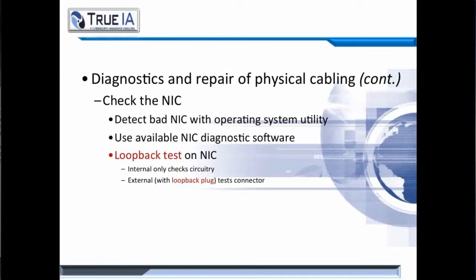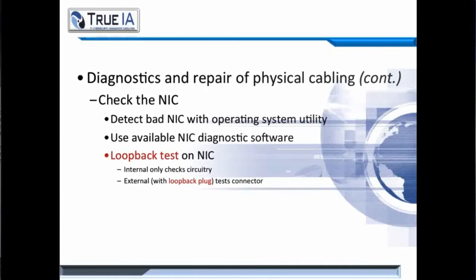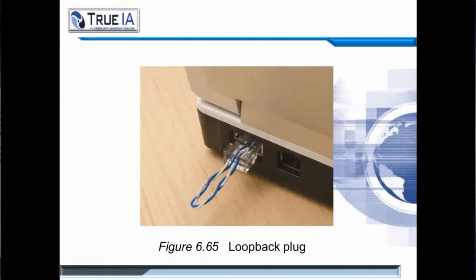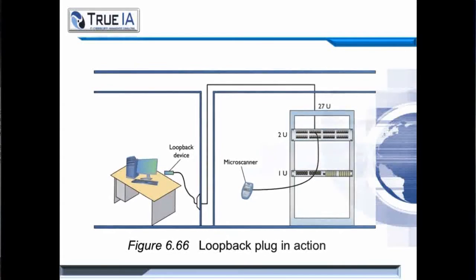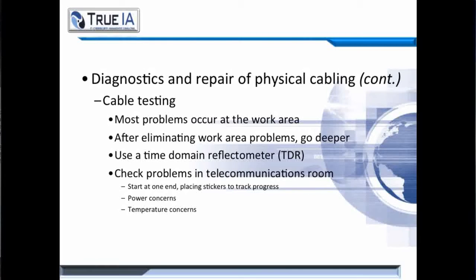To check the NIC in Windows, the best place is the Device Manager. However, you might be required to do what's called a loopback test — an internal check of the circuitry that requires a loopback plug. Remember, most problems occur in the work area. After eliminating any work area problems, you'll have to go a little bit deeper — this is where the TDR might come in handy. The next best place to start looking is in the telecommunications room. Take note as to whether you're having any power problems or any temperature fluctuations in the room.